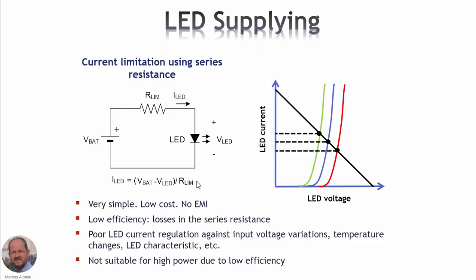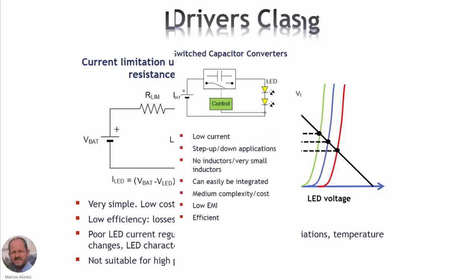Using this expression, we can obtain the value of the current for different values of the limiting resistance. This solution is very simple and cheap, and we don't have any problem with EMI or interferences. However, the problem is that we are going to have losses in the series resistance, so the efficiency is low. Also, the current regulation against input voltage variations, temperature changes, and LED characteristics is not very good. The conclusion is that this is the common solution for low power LEDs, but is not suitable for high power applications due to low efficiency.